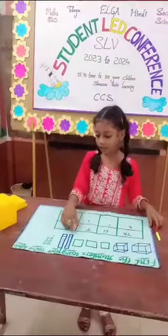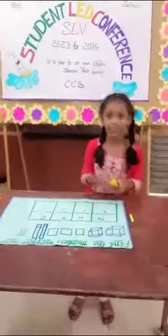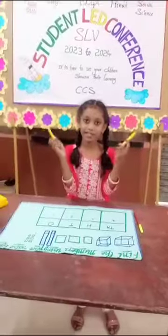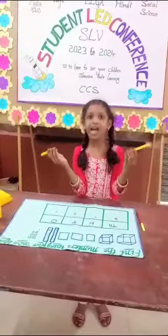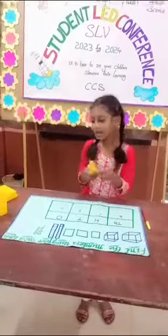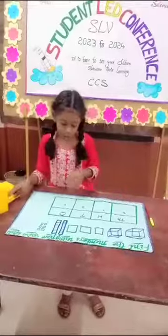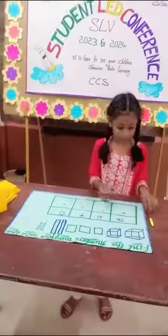There are 2 cubes. So I will take 2 cubes. They represent the tens place. So I will write 2 in the tens place.